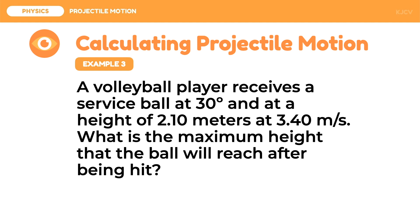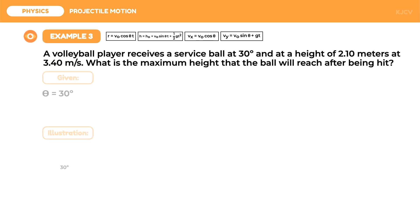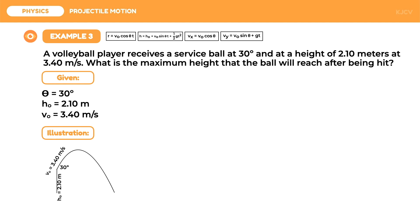Now let's discuss this problem: a volleyball player receives a service ball at 30 degrees and at a height of 2.10 meters at 3.40 meters per second. What is the maximum height that the ball will reach after being hit? For this problem, we are given the angle of release of 30 degrees. The height of 2.10 meters is not the maximum height — rather, it is the height where the projectile was launched. Thus, h-naught equals 2.10 meters, and v-naught equals 3.40 meters per second. We are asked to find the maximum height of the projectile.